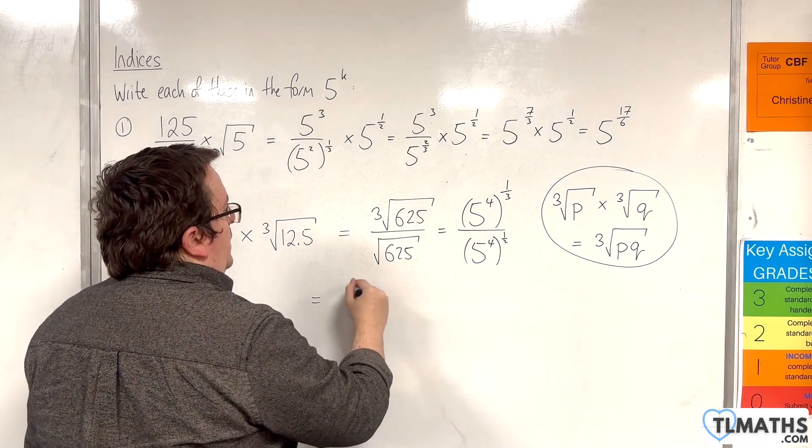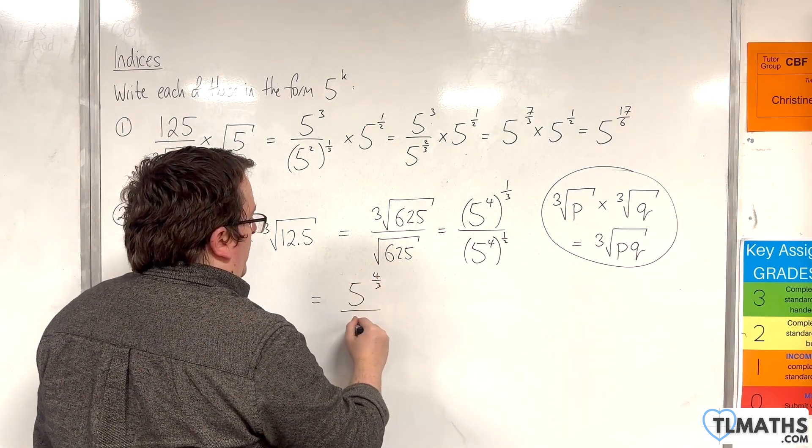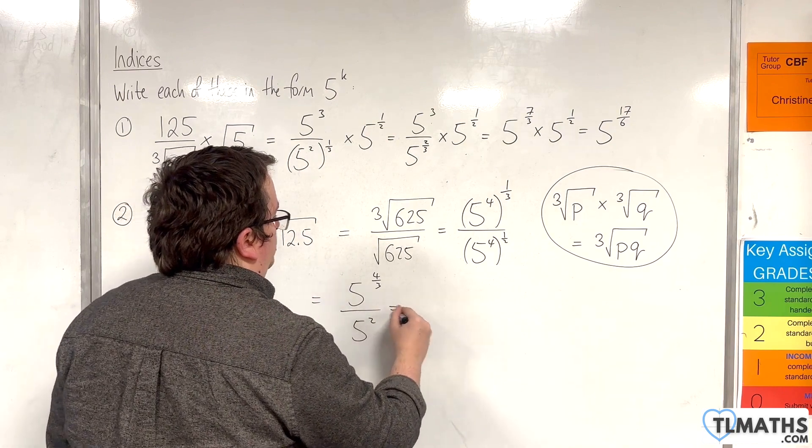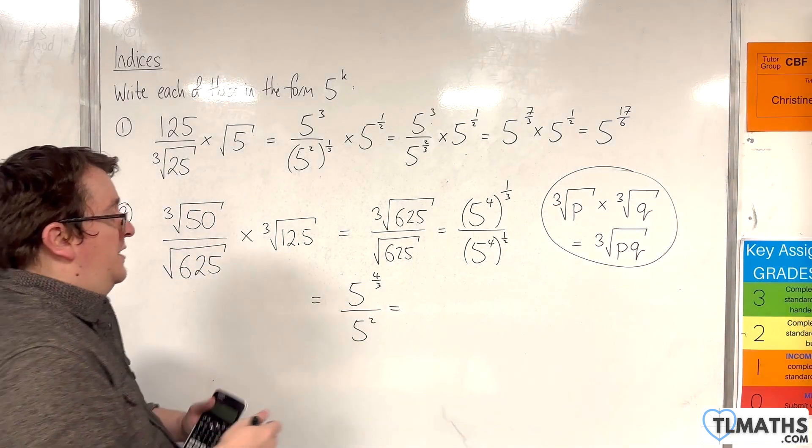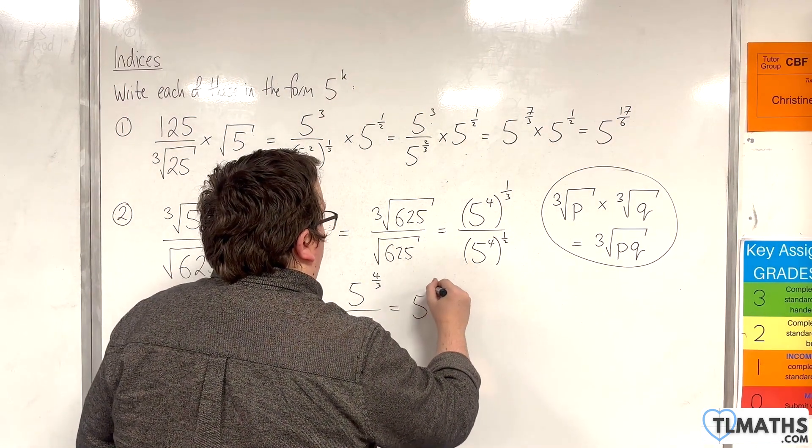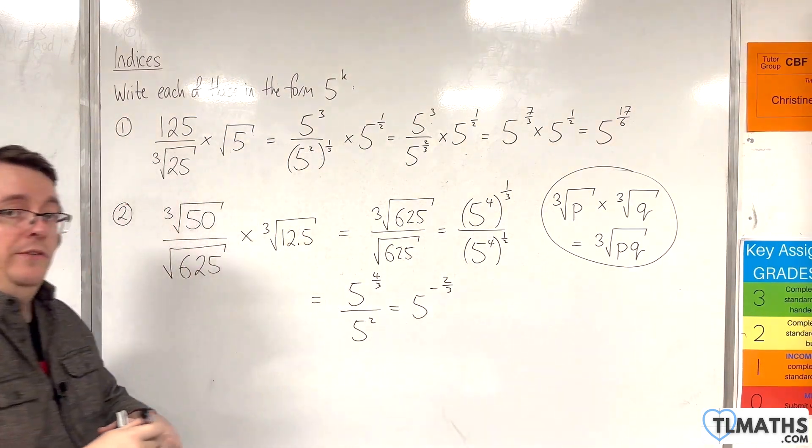So we have 5 to the power of 4 thirds over 5 to the power of 2. So 4 thirds take away 2 is minus 2 thirds. So 5 to the power of minus 2 thirds is our answer.